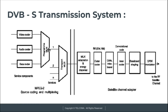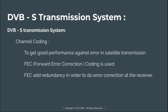The program multiplexer passes multiple signals to the transport mux. This part of the system handles MPEG-2 source coding and multiplexing. After the signal reaches the transport mux, it goes through mux adaptation and energy dispersal, then the outer coder, then the convolutional interleaver, then the inner coder, then baseband shaping, and finally the QPSK modulator. The output of the QPSK modulator is passed to the RF satellite channel.